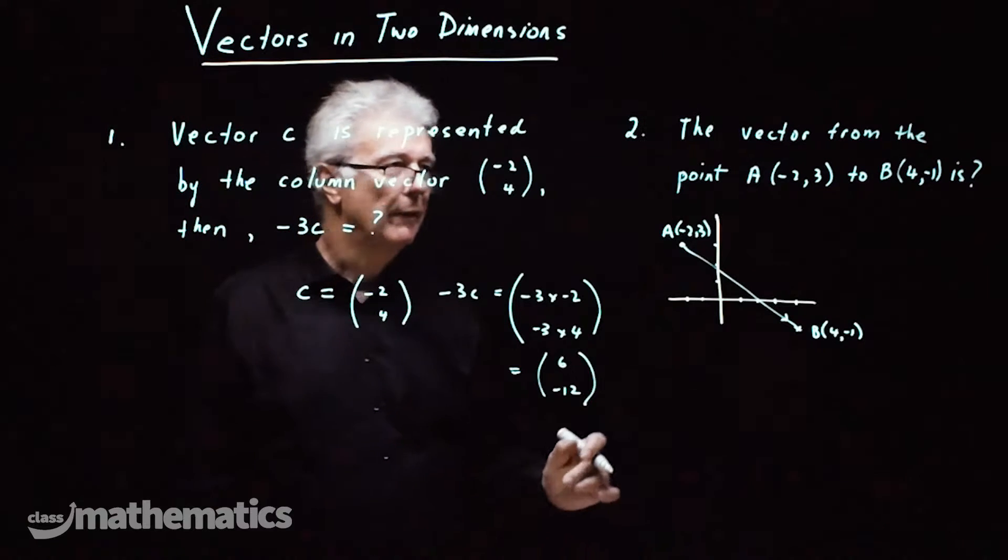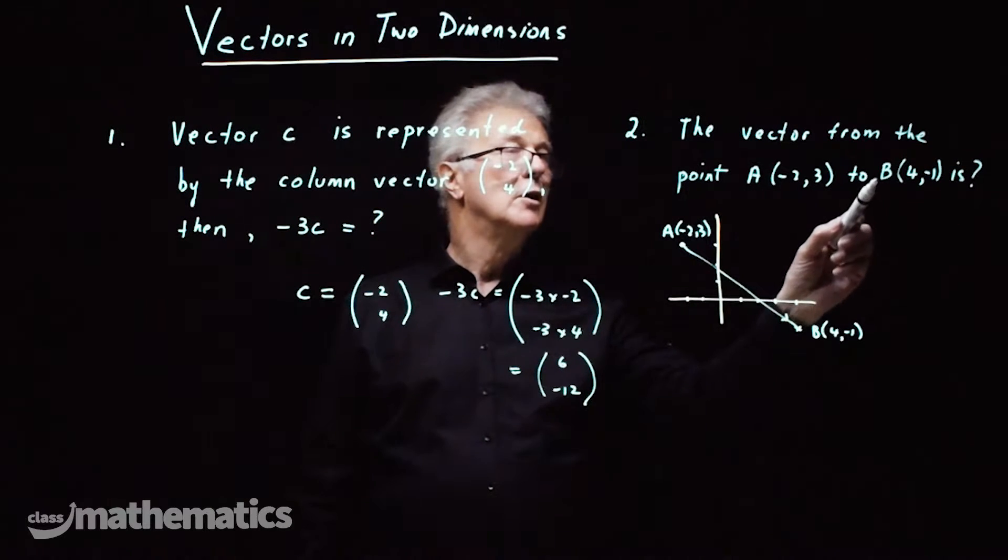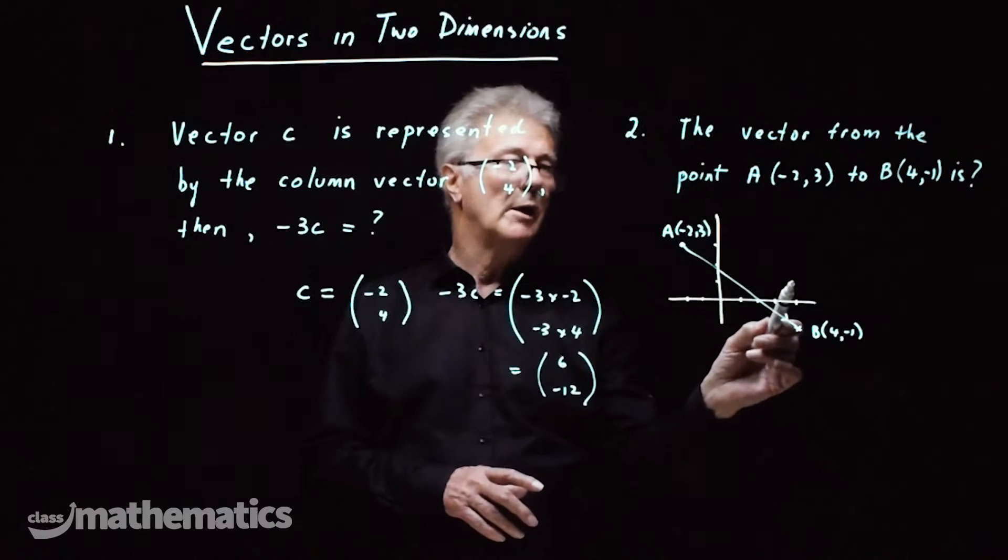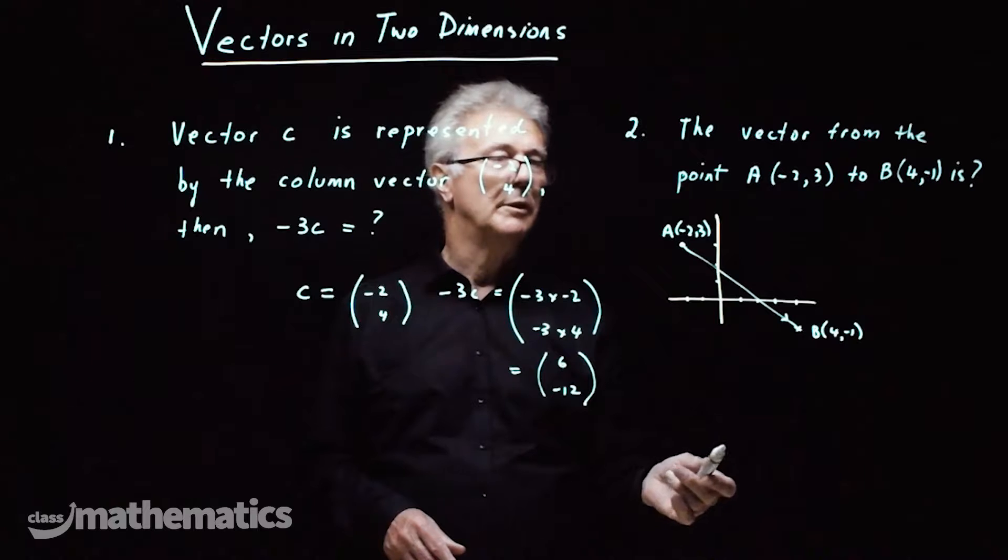Number two, the vector from the point A minus 2, 3 to B 4, minus 1. Now we'll use the diagram first to show how to do it and then we'll use the column vector approach.